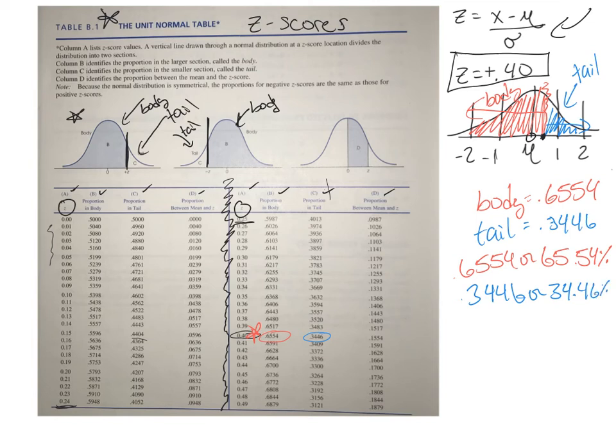Let's talk probabilities. If I was to ask you, what is the probability of just randomly selecting a score that is less than 0.4 z-score, looking at the body, you would say it's a probability of 0.6554 or a 65.54 percent chance.